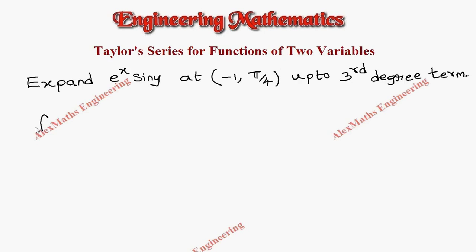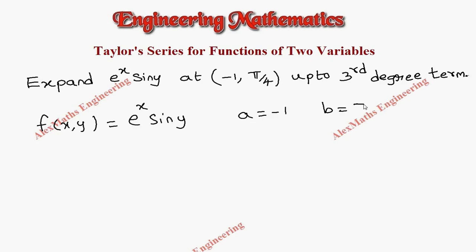The given function, let us take it as f of x comma y, that is e power x into sin y, and the point here is a value minus 1, b value pi by 4. Now we have to find f of minus 1 comma pi by 4. E power minus 1 is 1 by e, and sin pi by 4 is 1 by root 2.